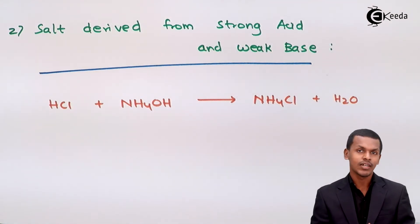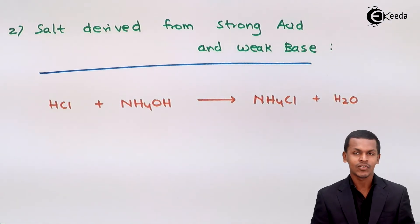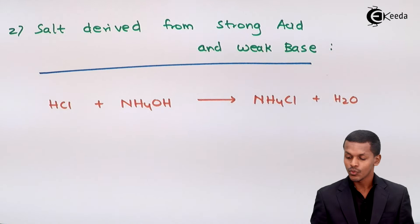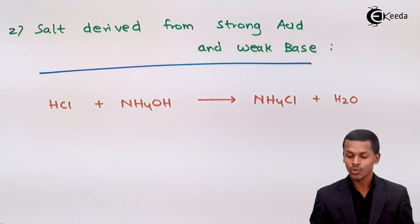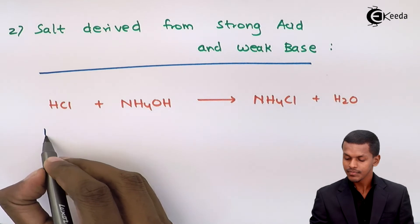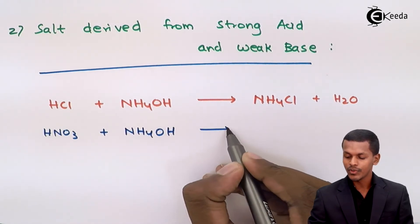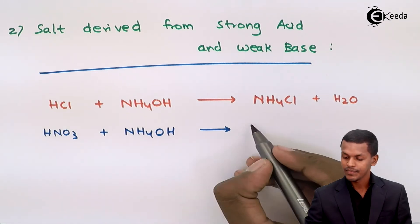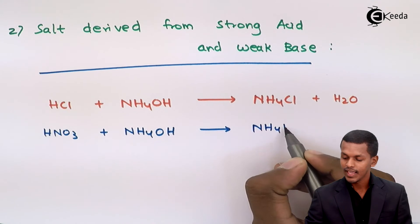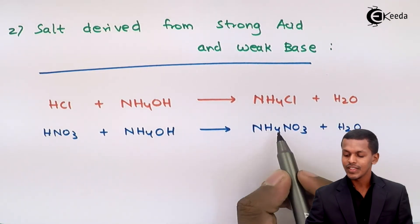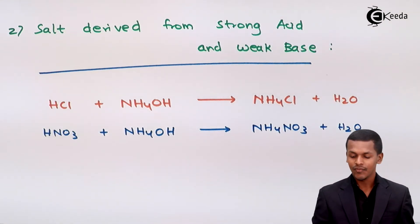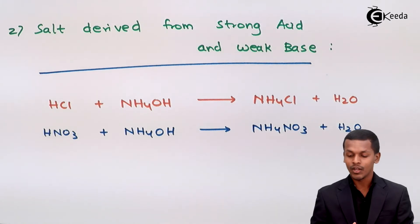NH₄Cl, like any salt, is made up of a positive cation and a negative anion, making it the ionic product of the neutralization of an acid and base. This salt is derived from a strong acid and a weak base. Another example: if we take HNO₃ and react it with weak base NH₄OH, the product we get is NH₄NO₃ along with water.